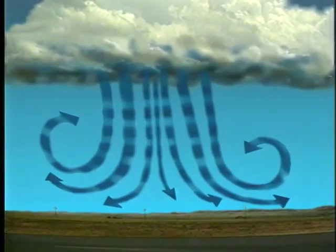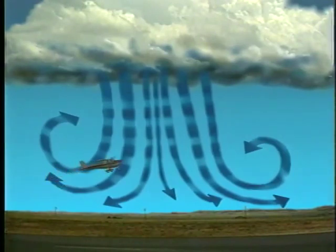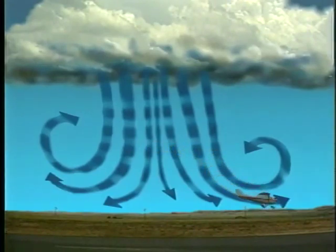Wind shear is particularly dangerous when it's in the proximity of an airport. To show you what can happen suppose you're taking off into a microburst. You would initially experience a headwind and an increase in performance. When the aircraft reaches the point where the wind shears to a tailwind it experiences a severe decrease in performance which could lead to disastrous results.